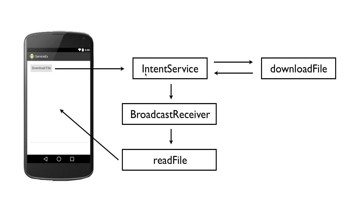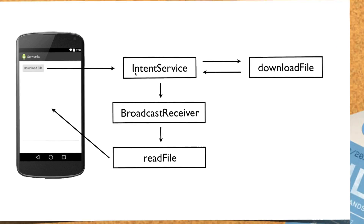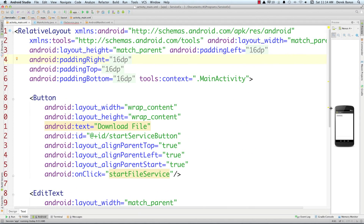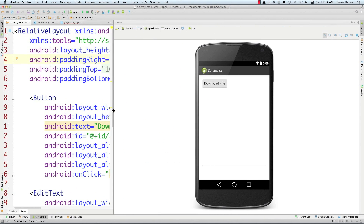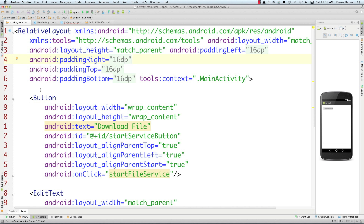An Android broadcast triggers an event that a broadcast receiver — which is going to be in our main activity — can then act on. The broadcast receiver is going to tell our main activity to read that file we just downloaded and put it in the editable text box on the left-hand side of our app. Here inside Android Studio I've already laid out the button and editable text box ahead of time.